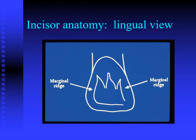Looking at the lingual surface in the line drawing, the cingulum is delineated pretty clearly. There may be a lingual developmental fissure or pit in these teeth. This shows the lingual fossa relationship, the mesial and distal marginal ridges, and the lingual cementoenamel junction. The developmental incisal edge wears to form both a lingual incisal edge and a facial incisal edge.